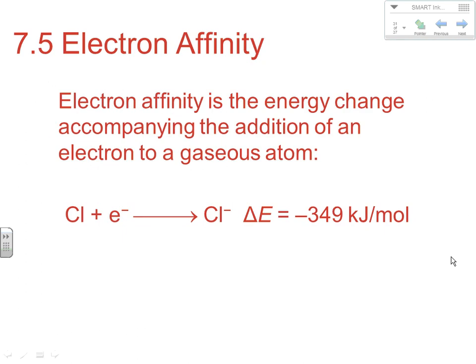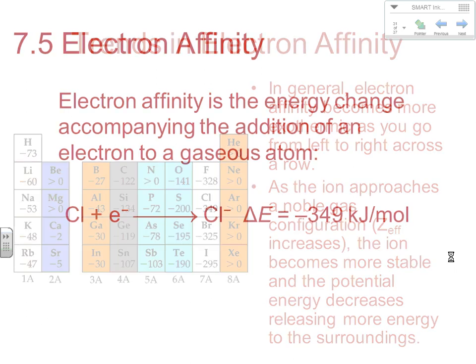Next we'll look at electron affinity — the energy change accompanying the addition of an electron to a gaseous element. Think of this as the opposite of ionization energy. Ionization energy is the energy we spend to yank out an electron; electron affinity is the energy involved when we add an electron. In general, except for noble gases, most things are looking to gain electrons to get a noble gas configuration. As they're gaining electrons, there is typically a bigger drop in potential energy and it does get easier.